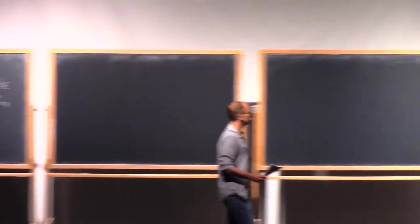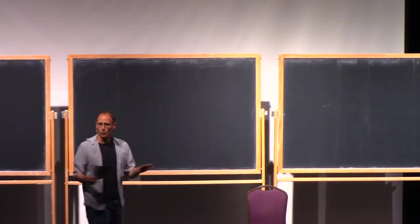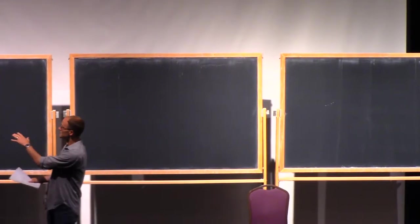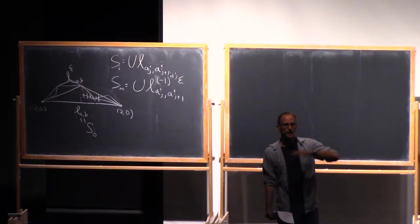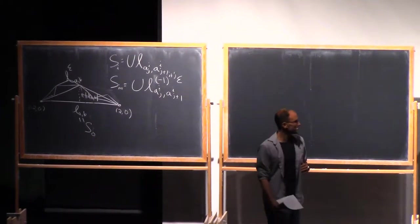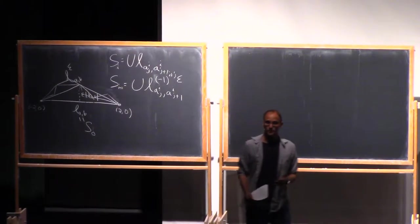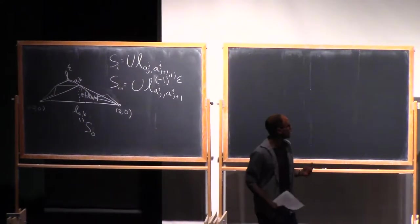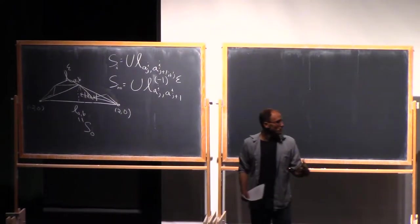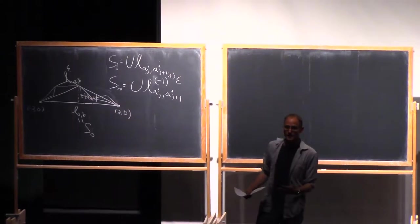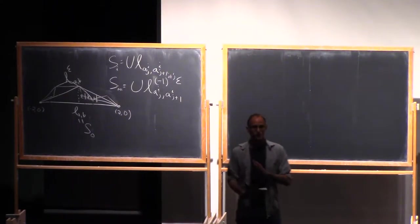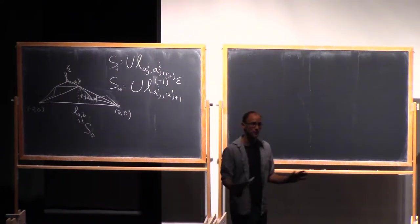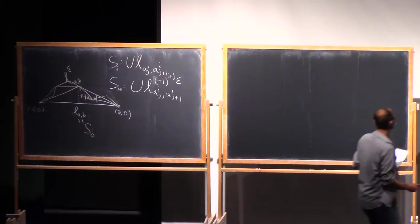So the idea is what? The Reifenberg was nice. So it said that if we had a set, and we could approximate it by affine planes in all scales, then it had to be byholder to a manifold. And this is pretty interesting. In practice, when we want to apply these things to singular sets, it doesn't work like that. It's not quite so clean. So there's a variety of issues that appear if you're trying to use the classical Reifenberg.